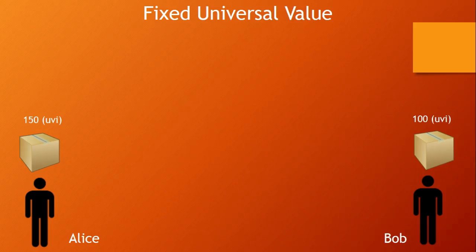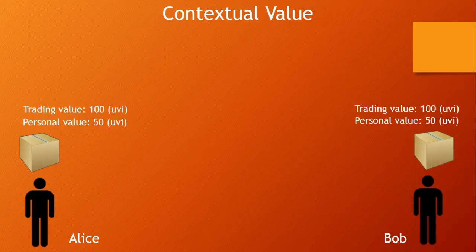Because Bob would win and Alice would lose, Alice would have no motivation to participate in this transaction. In reality, people don't view things from a fixed universal value. People have different opinions on what value something has — this is the contextual value system. This dictates that the value of something changes depending on its context. Everyone has a defined value for which they personally value something, and the primary factor is how useful it is to that person. If someone has an excess of something, that excess is worth nothing since they cannot use it — but the items they can use have value, and the more valuable it is to their unique context and situation, the higher its value.